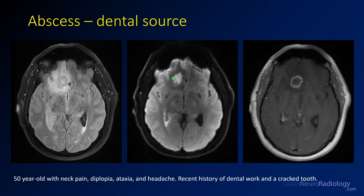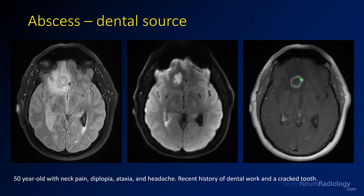On diffusion you see a focal area of rather bright diffusion, and some diffusion-bright material in the ventricle. On post-contrast imaging you have a ring-enhancing collection in the left inferior frontal lobe — that central material is the area with reduced diffusion. This distinguishes it from lymphoma, which tends to have reduced diffusion in the enhancing portion. You also see enhancement around the margins of the ventricle, indicating spillage of pus with ventriculitis.